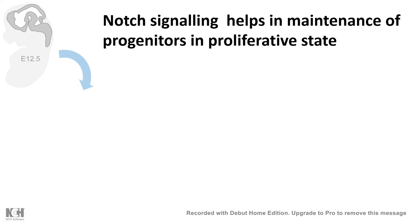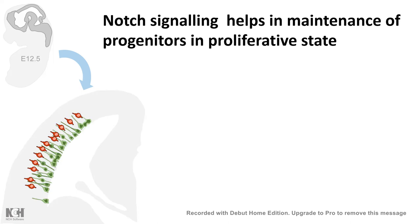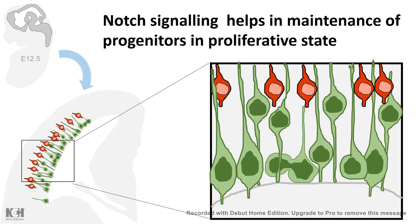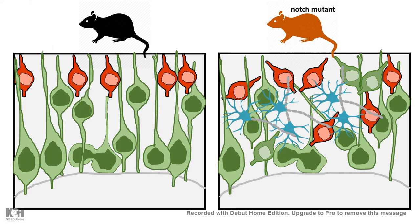Notch signaling is not only important in the context of cancer or disease — it is a fundamental signaling pathway underlying development. In brain development, in the mammalian brain, the ventricular zone is populated with stem cells that are highly proliferative progenitors for neurons. These stem cells are maintained in a proliferative state by Notch signaling. When Notch is mutated in mice, the stem cells of the ventricular zone differentiate into neurons prematurely, causing a burst of neurogenesis followed by cognitive impairment.